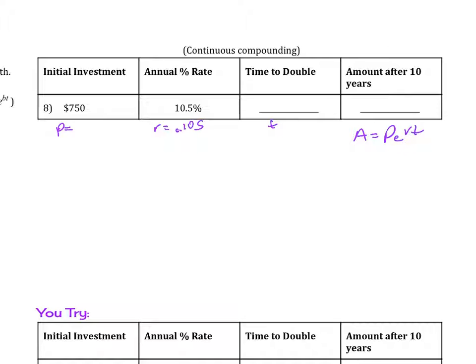So we're looking for time here. Now to double the initial investment, that's going to be 2 times 750, and that's going to be our A value. And so what that is is 1500. So A is 1500 and we're trying to search for time. So you plug it in.